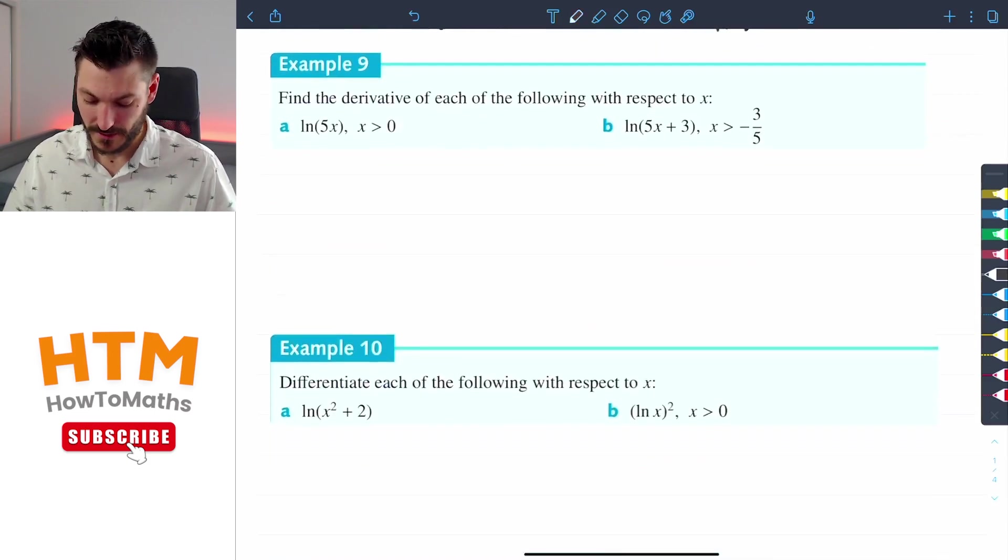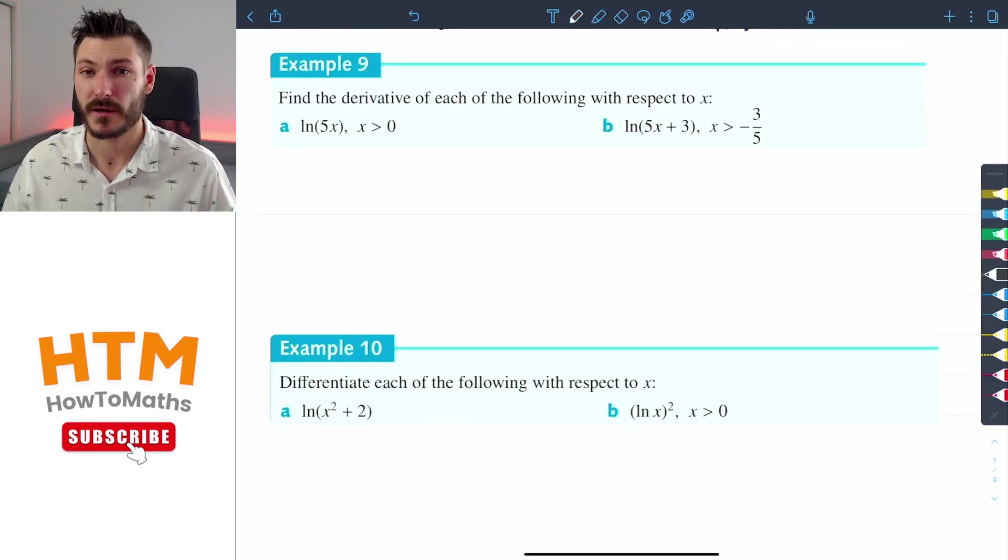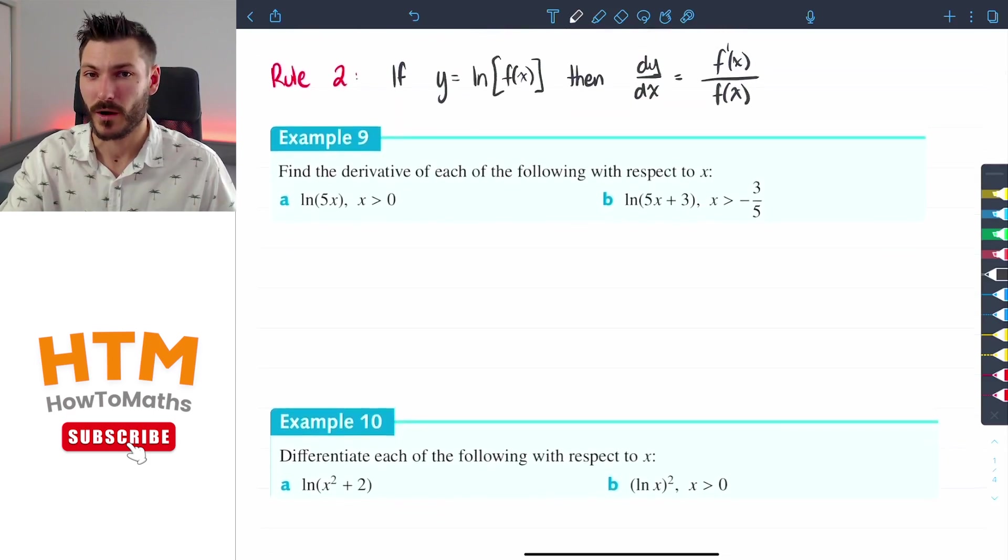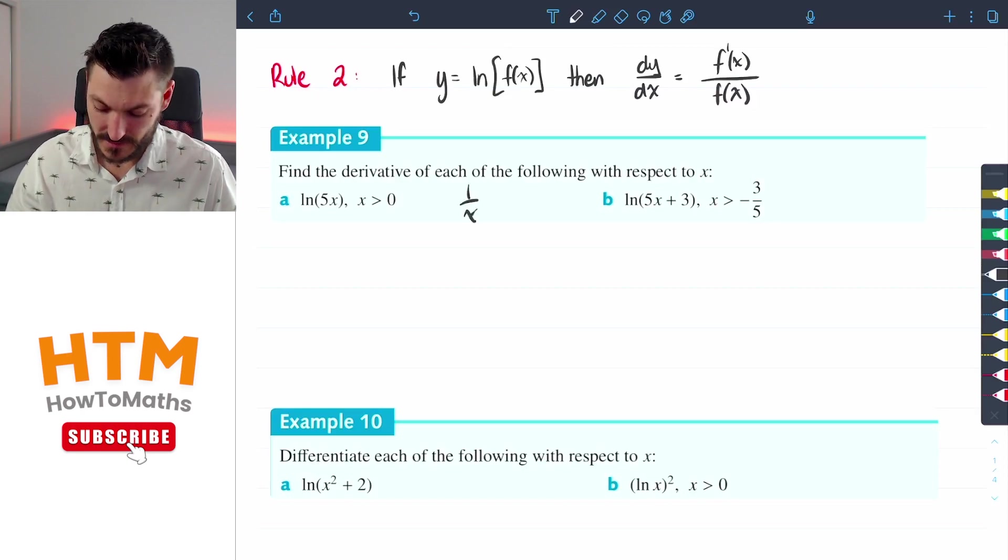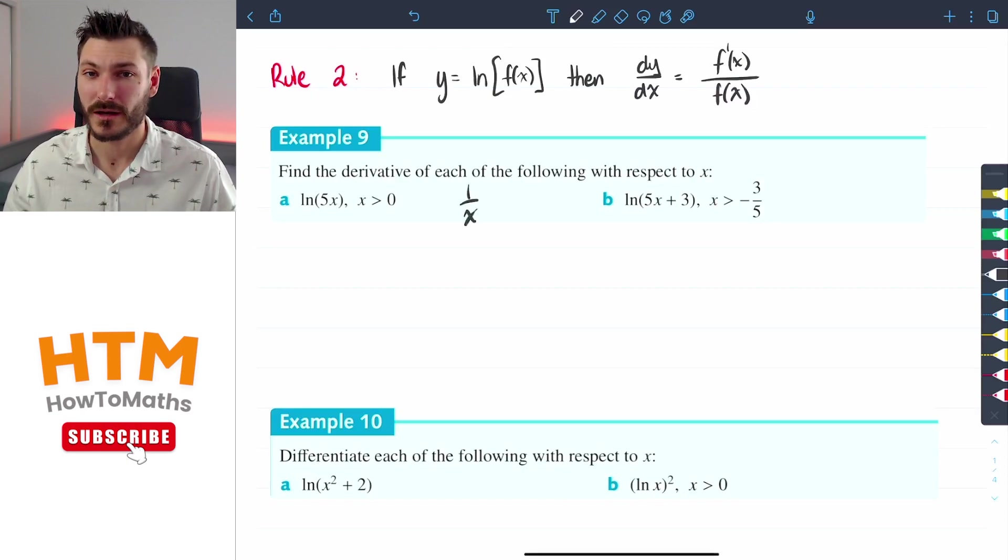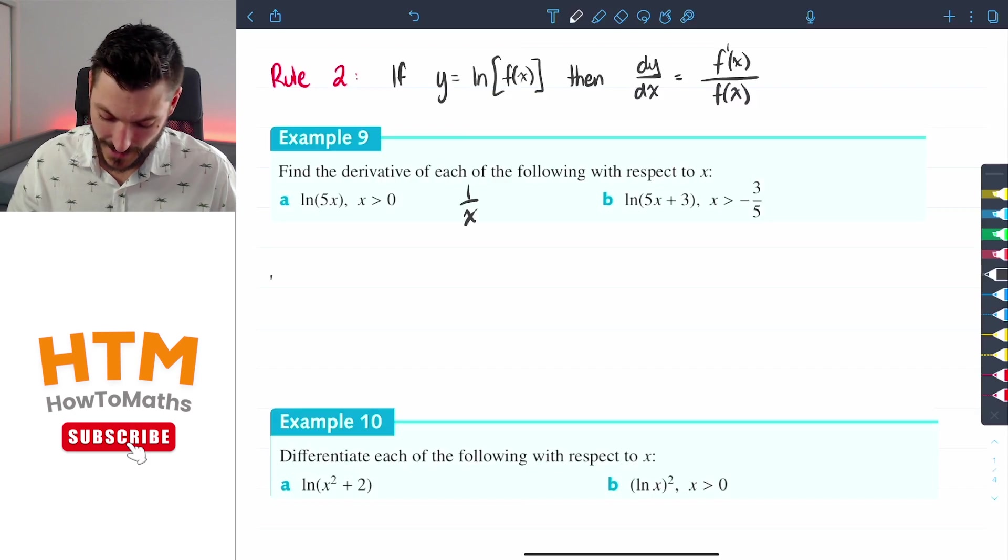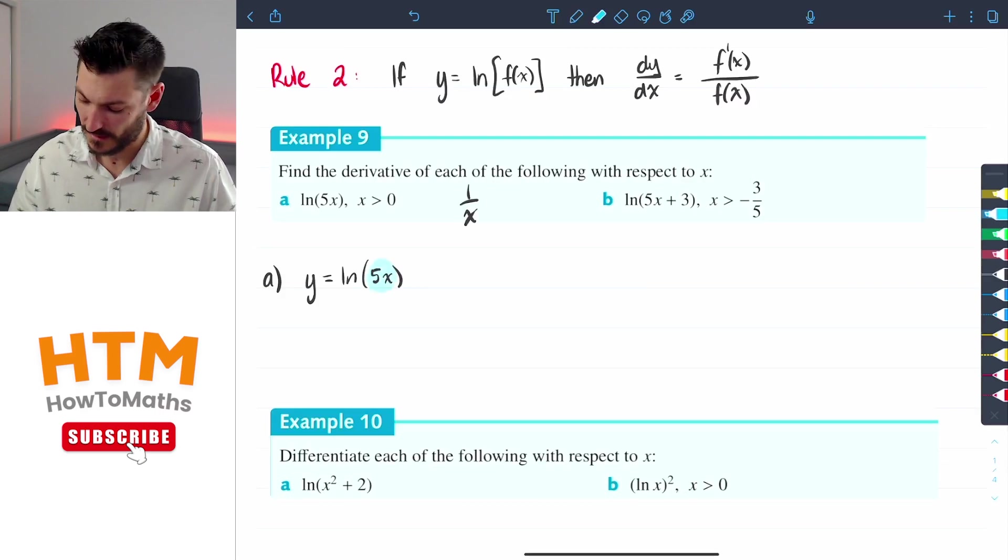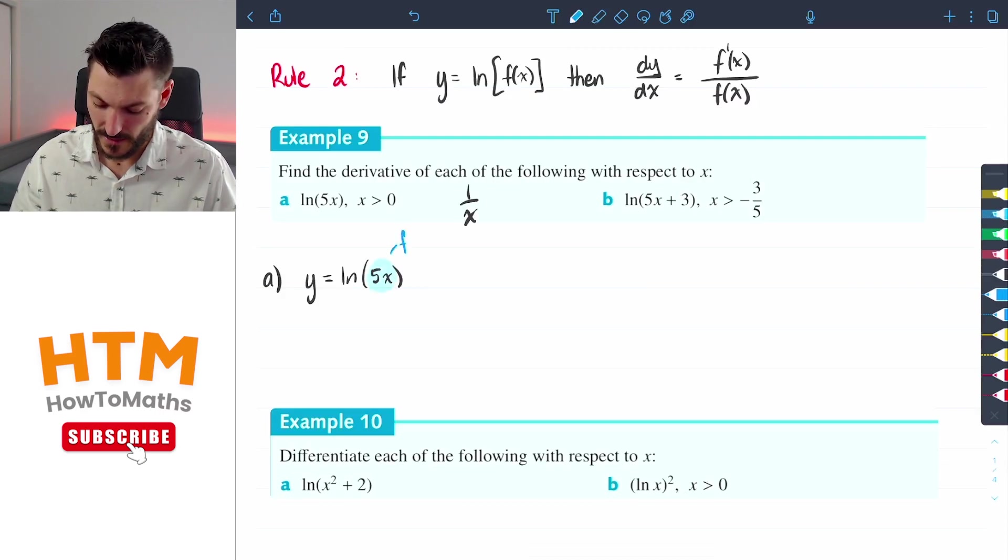So example 9 part a says find the derivative of each of the following with respect to x, and a is ln of 5x. So we're going to use rule number two instead of rule number one. Now we know that the answer is going to be 1 over x from rule number one. Let's see why. a: y equals ln of 5x. Now the derivative of that inside, so f'(x), is going to equal 5.